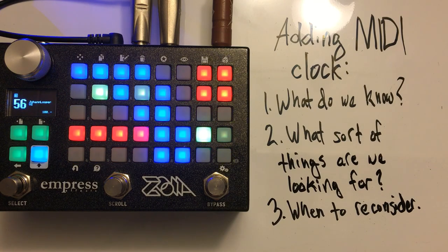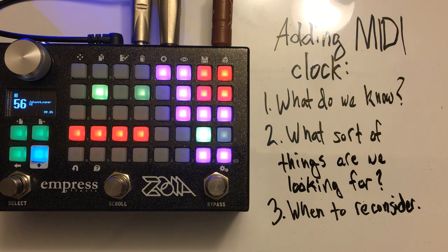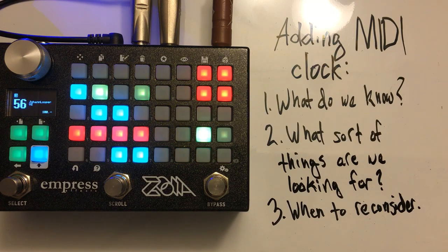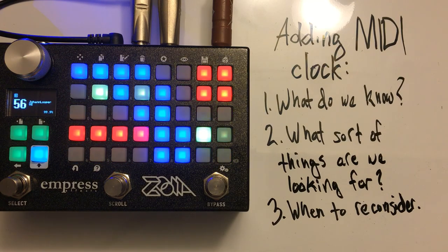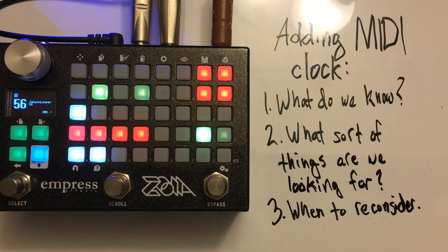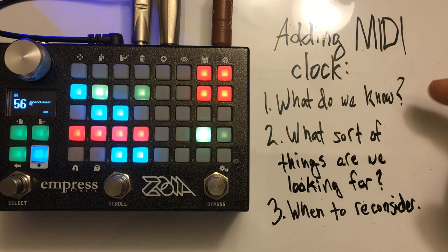The first thing I'm going to talk about with adding MIDI clock to a patch that doesn't have it is there's a checklist you should probably go through in some way, shape, or form. You might not write it out as three questions that you ask yourself, but there are things you want to think about before you endeavor to perform this. The first one is: what do we know about the patch to begin with?